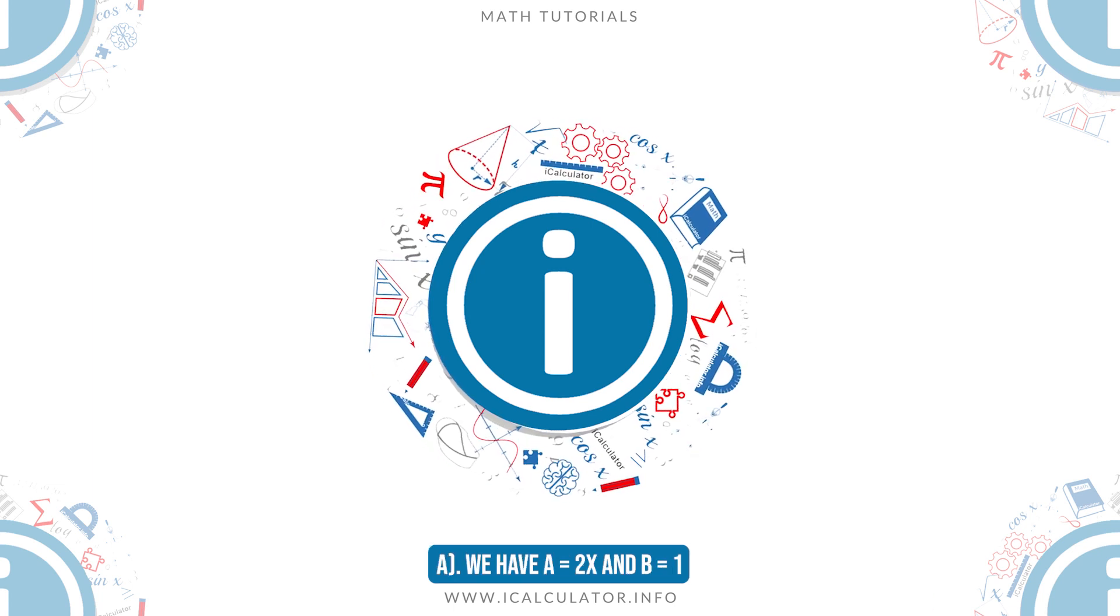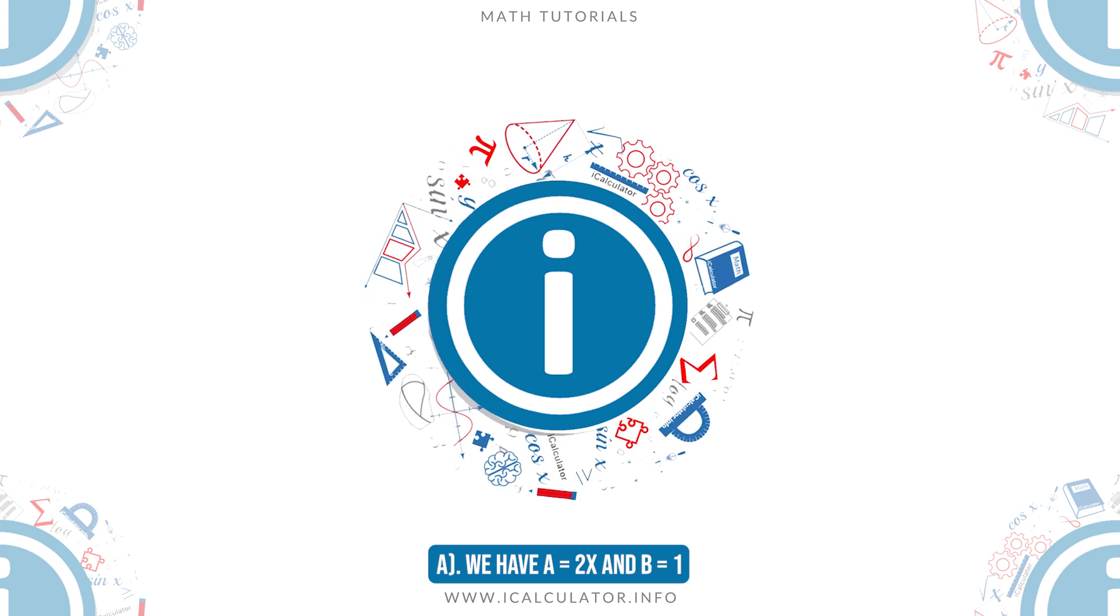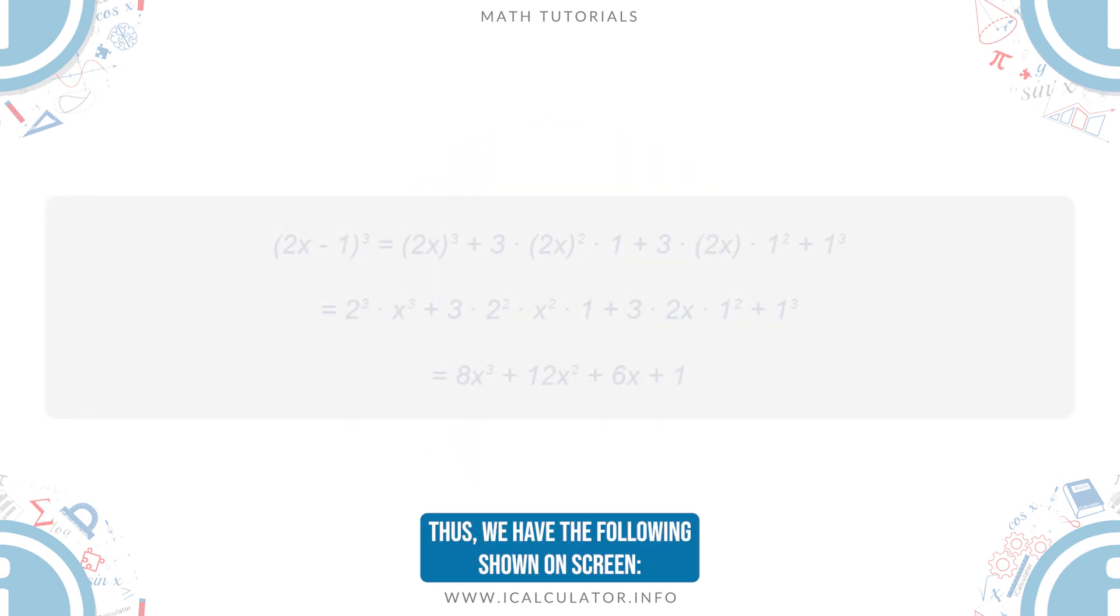A, we have a equals 2x and b equals 1. Thus, we have the following shown on screen.